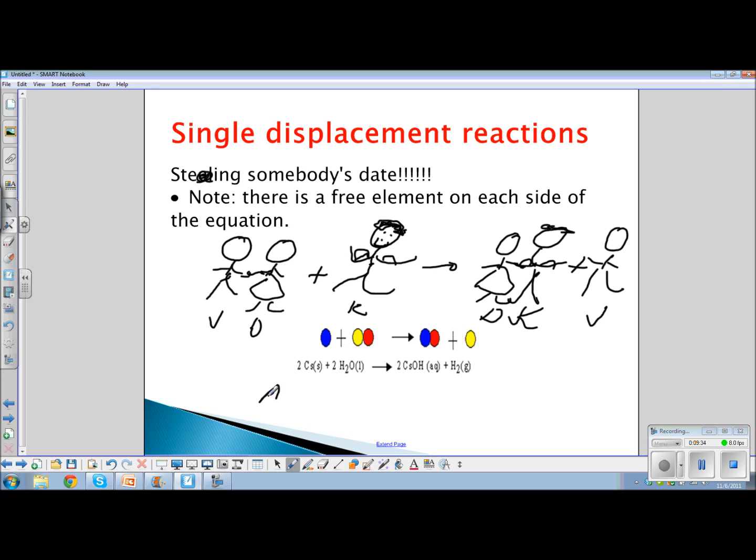So you can also illustrate it as A plus BC yields AC plus B. We could illustrate it with a real reaction. Iron plus AgNO3, silver nitrate, yields iron nitrate plus silver. I will do this reaction for you tomorrow in class. And we will produce silver. Pretty cool stuff.